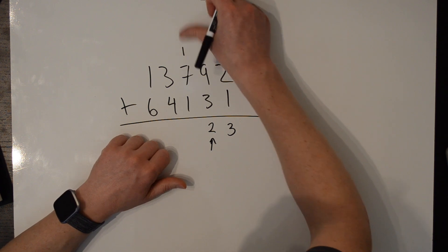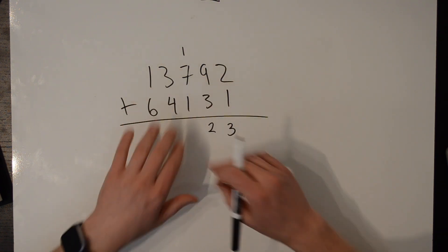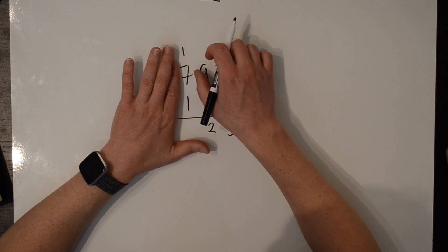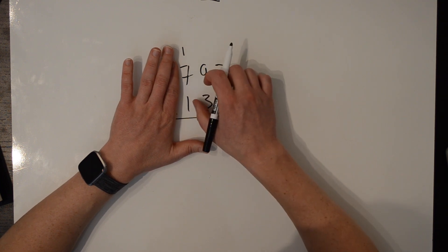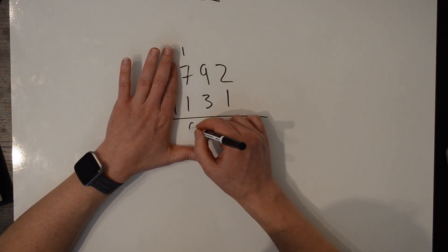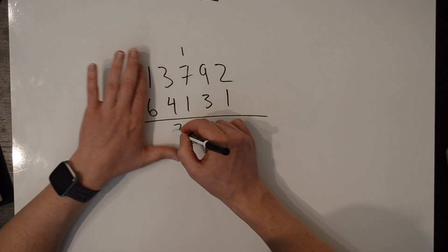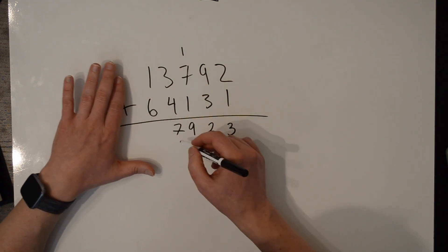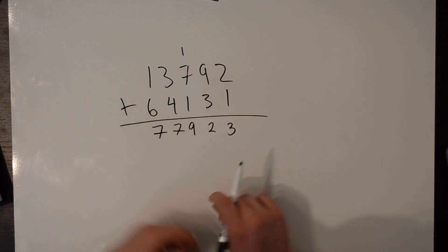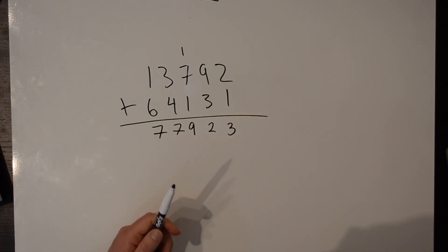So hang on to that little fact for a minute. Let's finish adding by continuing our algorithm. 7 plus 1 is 8, plus the carry is 9. 3 plus 4 is 7, and 6 plus 1 is 7. So that's how we add two numbers in decimal, or base 10.